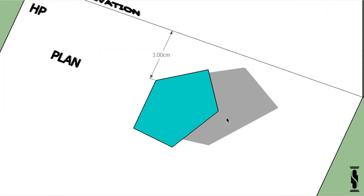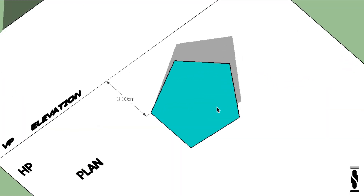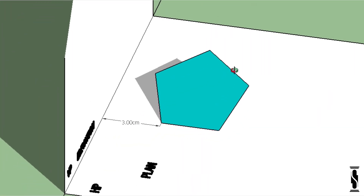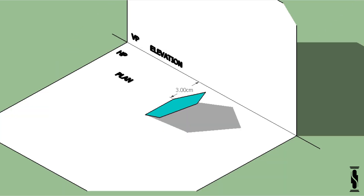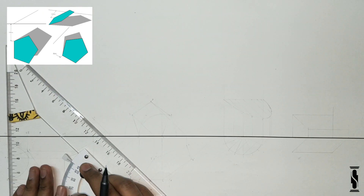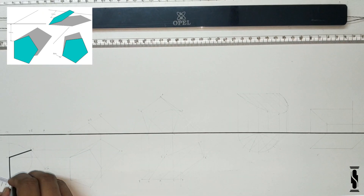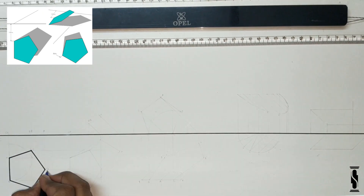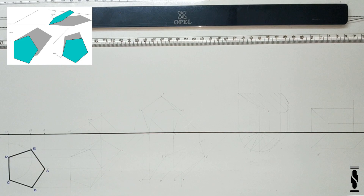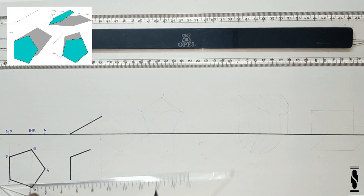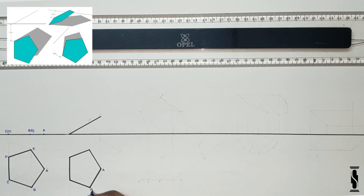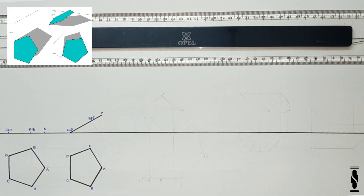Now take a look at the 3D representation. We can see that the shadow of the plane is starting from its base and falling on HP. Now draw the basic orthographic projection as per the given condition. And now it's time to draw sciography.